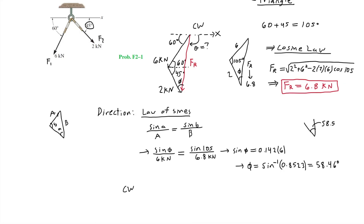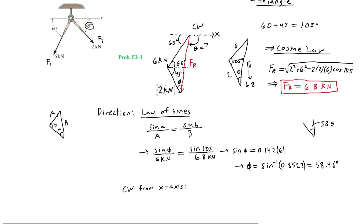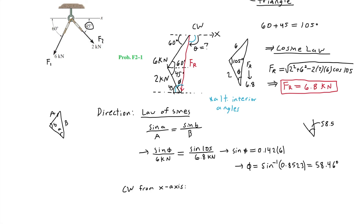Using this information we can now find θ measured clockwise from the x-axis. Drawing a horizontal line at the tip of FR, we know this angle is 45 degrees. Using alternate interior angles, the blue angle equals θ. Therefore θ equals 45 degrees plus 58.5 degrees, which equals 103.5 degrees. That is the direction of the resultant force measured clockwise from the x-axis.